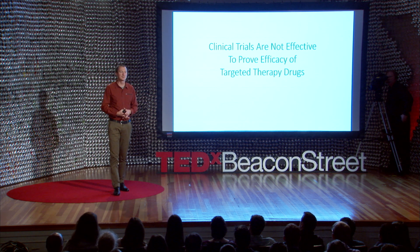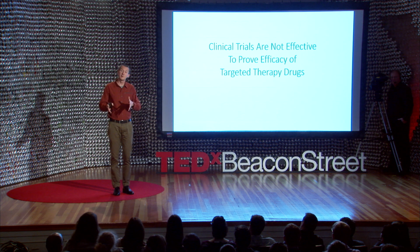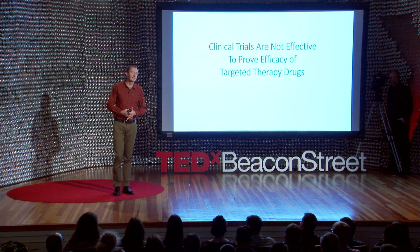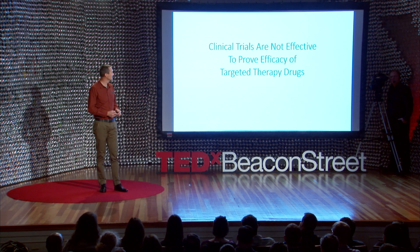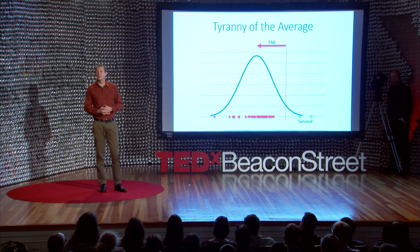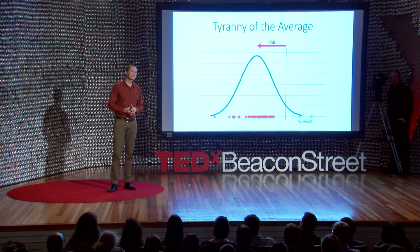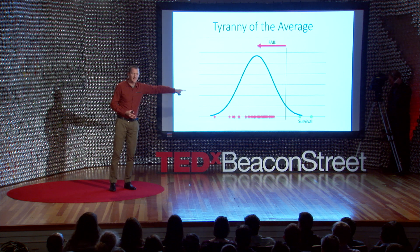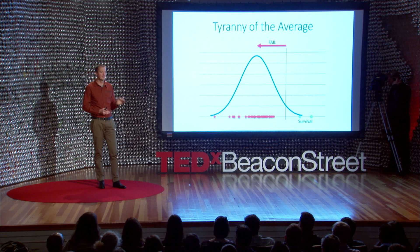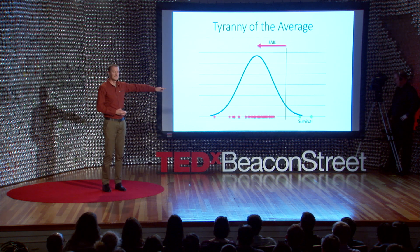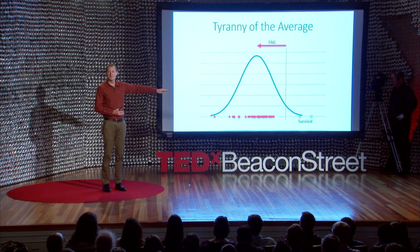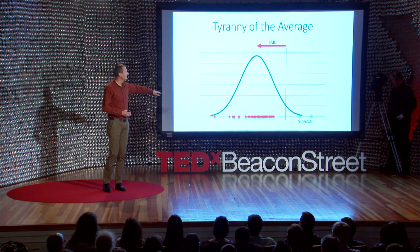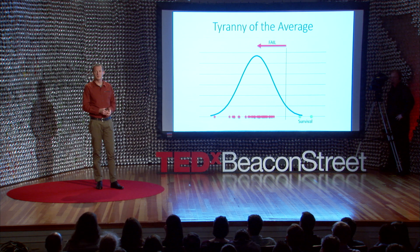Clinical trials — the classic way we seek to discover whether a drug is effective or not — are just not effective at finding solutions for the long tail of cancers. They're subject to the tyranny of the average. If the drug is generally ineffective for most patients, it's considered a failure, even if there are a couple of survivors who have a specific genetic mutation in their cancer that is helped by this drug. This data is not captured in a clinical trial. This data is lost. The drug has failed and is not available for use, even though it has promise for other areas.